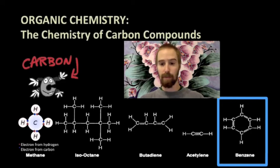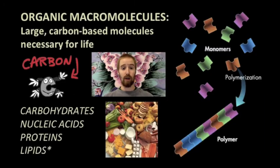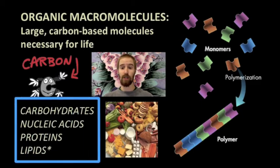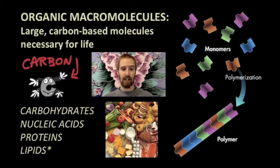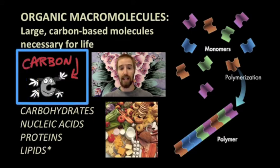There are four categories of organic macromolecules upon which all life depends, and these are the carbohydrates, the nucleic acids, the proteins, and the lipids. Organic means that all of these kinds of molecules are made up largely of carbon atoms, just like methane, octane, and benzene.